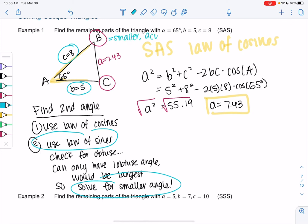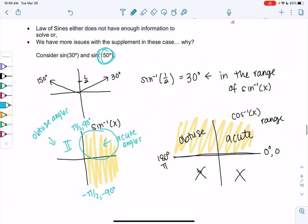So b = 5 and c = 8. So that means b is the smaller angle. So it has to be acute. And then c is larger, so we don't know. It could be obtuse. So we can't use law of sines to solve for c. We're going to solve for b instead.